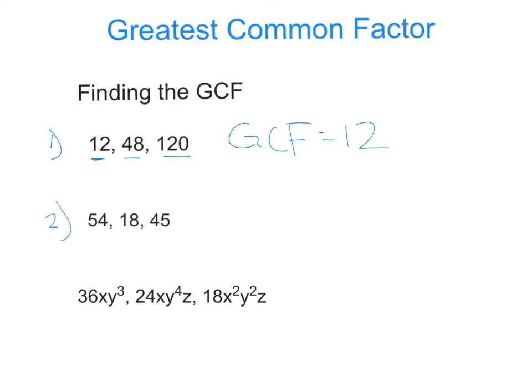Now, our second example here, we have 54, 18, and 45. And we have to think, what number divides into all of those? And if we think about that for a minute, our Greatest Common Factor should be 9.